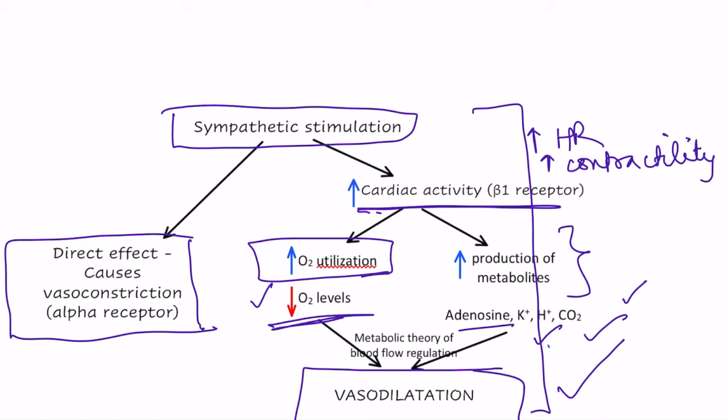Similarly, parasympathetic stimulation directly causes vasodilation, but parasympathetic stimulation also decreases heart activity, causing decreased oxygen utilization and reduced metabolite production, so the net major effect is vasoconstriction. The key point is that the effect of both sympathetic and parasympathetic stimulation on coronary circulation is mainly due to their indirect effects rather than their direct effects.